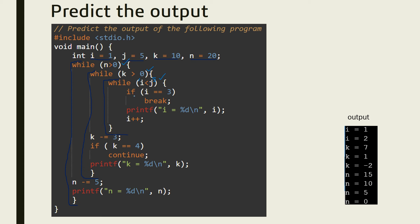Inside the inner while loop, it first checks if i equals 3. i is currently 1, so this is false and the break statement is not executed. It prints i equal to 1 — replacing the format specifier with the value of i. Then i is incremented to 2.